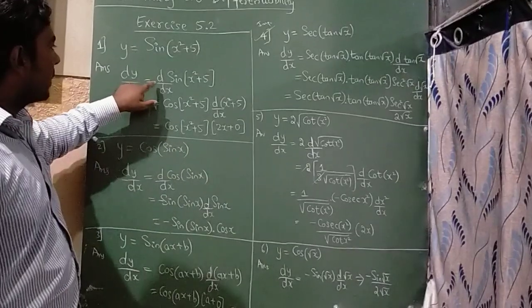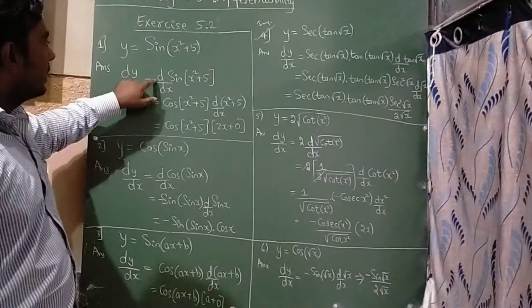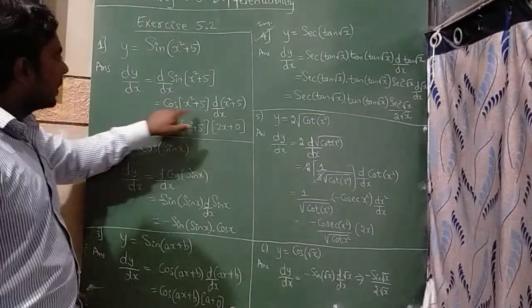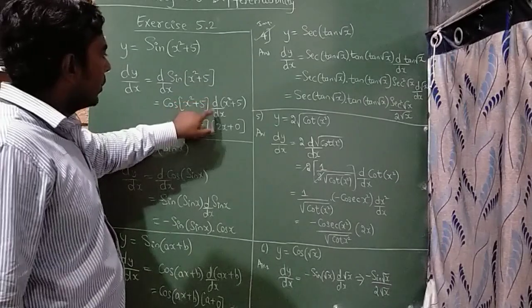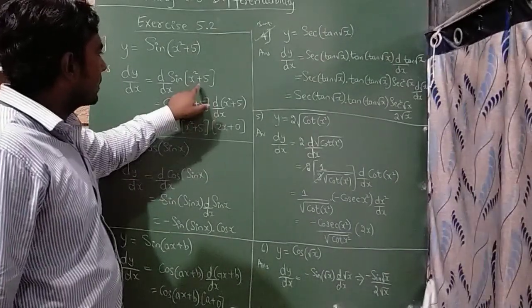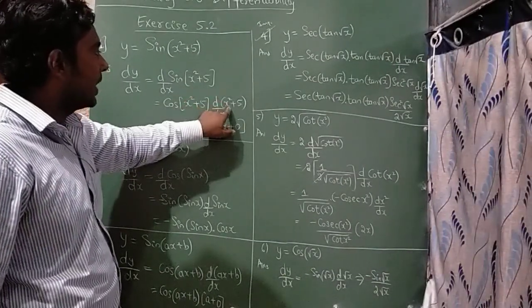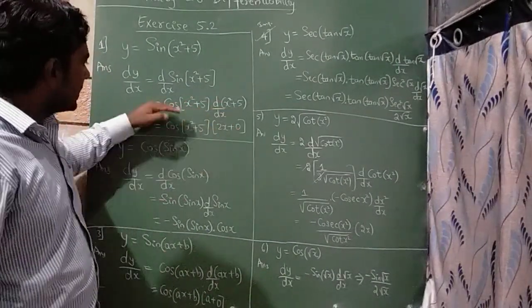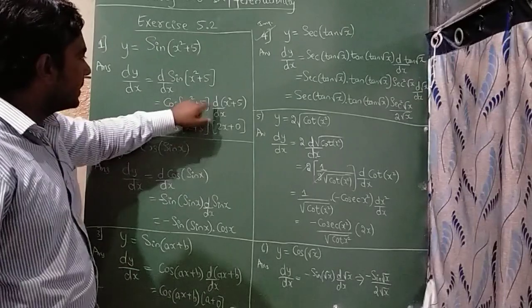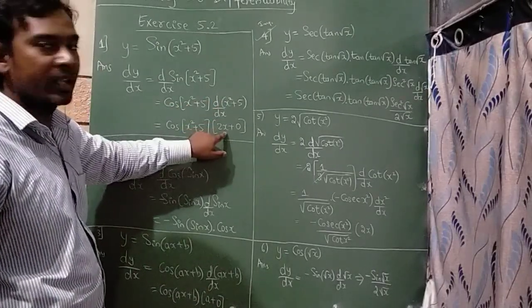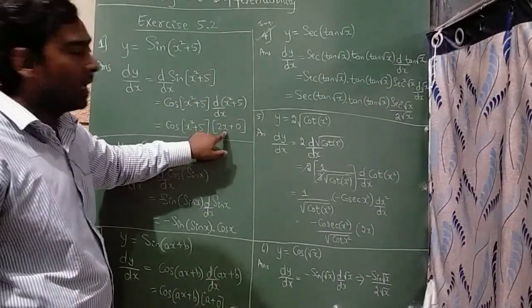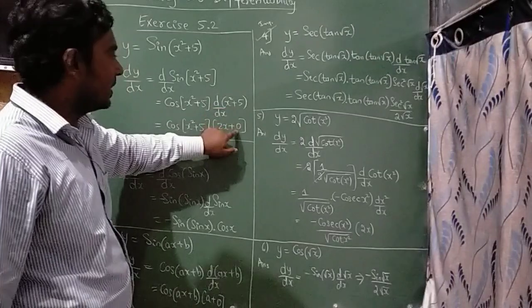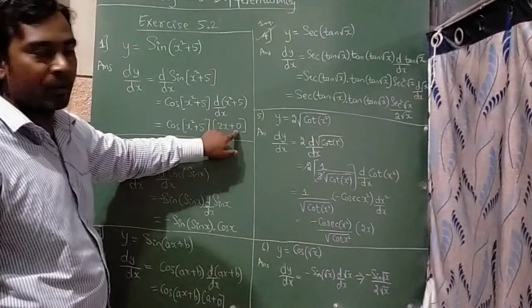First I am going to apply d/dx of sin, which is cos. Now again I am going to apply d/dx of the term (x² + 5). d/dx of x² is 2x by formula, and d/dx of a constant term is always 0.